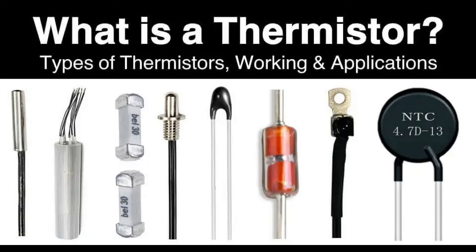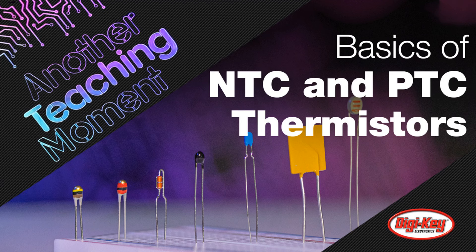For thermal protection, NTC thermistors can be used to monitor and prevent overheating in electrical devices. They might be employed in power supplies and chargers to detect and react to excessive temperatures. For inrush current limiting, inrush current can occur when electronic devices are first powered on; NTC thermistors can limit this inrush current by initially presenting high resistance, which decreases as they warm up. They are also used in automotive applications for engine temperature monitoring and climate control systems.